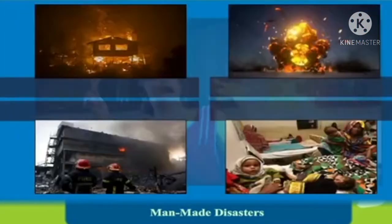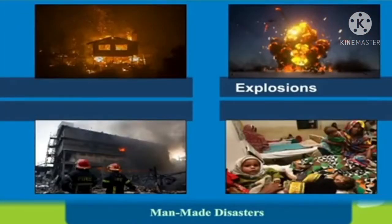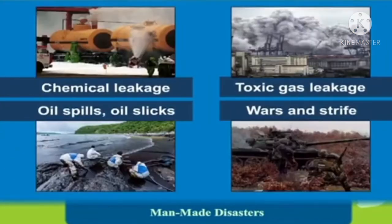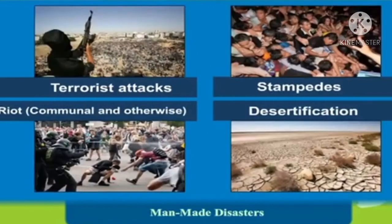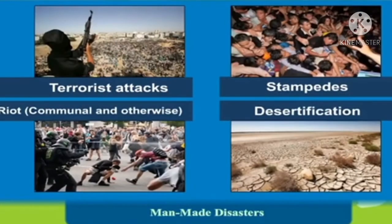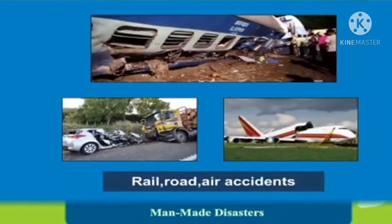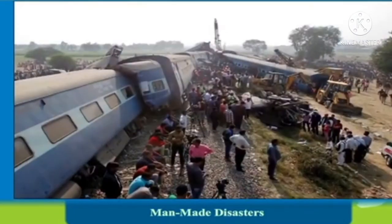These are disasters which occur due to human activities. They include explosions, oil spills and oil leakage, chemical leakage, toxic gas leakage, wars and strife. These are all examples of man-made disasters. Terrorist attacks, stampedes in large gatherings, riots, desertification, environmental degradation, rail and road accidents — all these are man-made disasters.